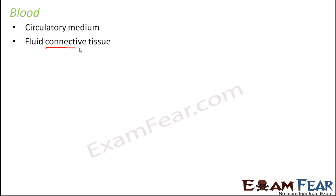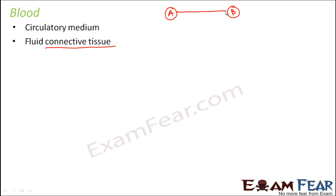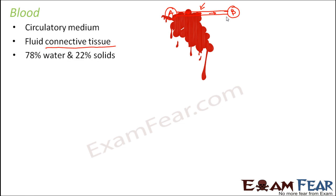A connective tissue is a type of tissue which connects two different parts of the body. Since blood flows from one part to another, it connects different places — just like a road connecting two towns, Town A and Town B, allowing people to travel between them. Similarly, blood connects different parts of the body, and since it flows, it is called a fluid connective tissue.